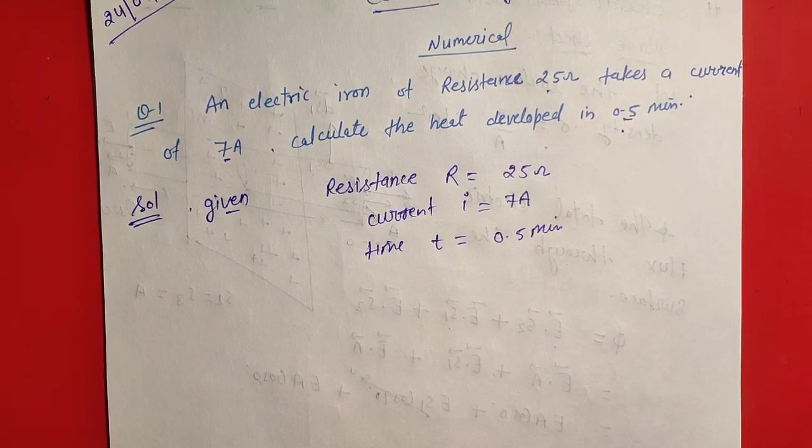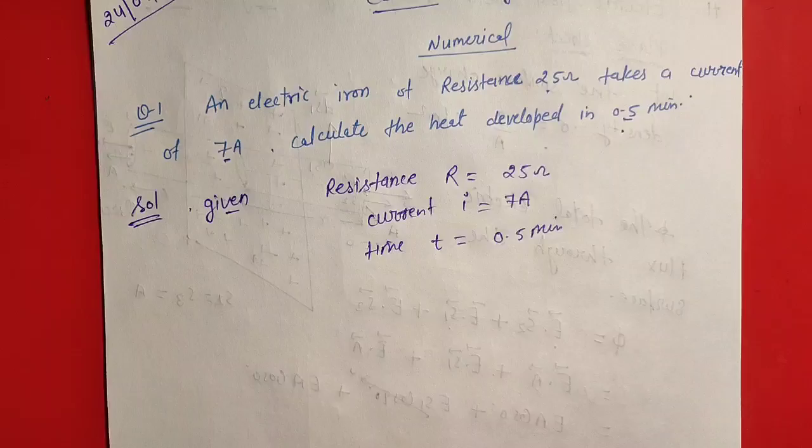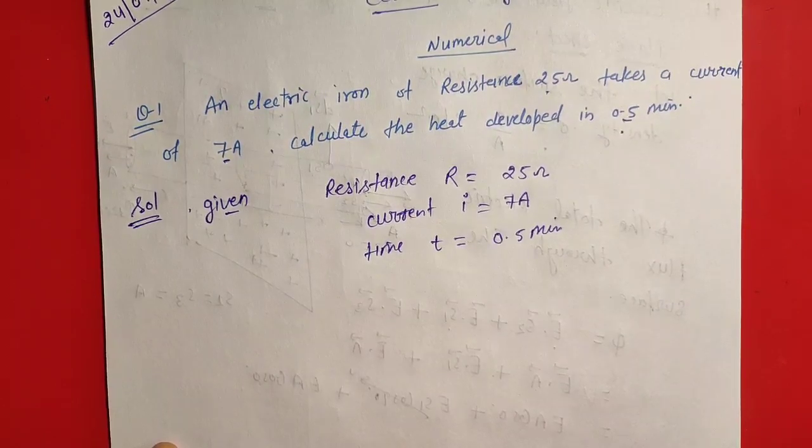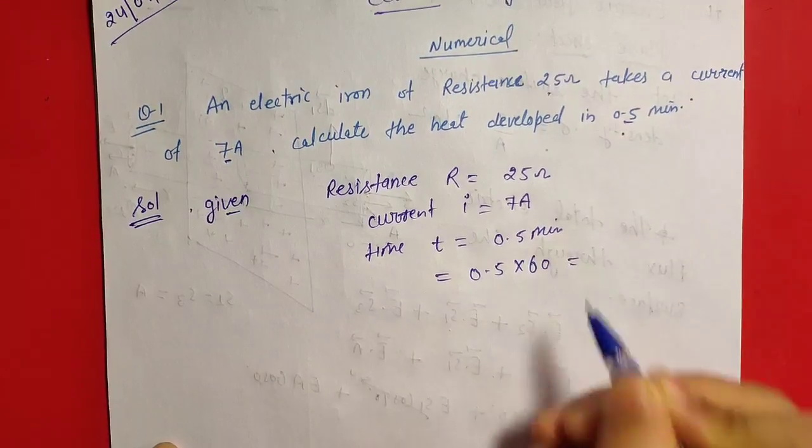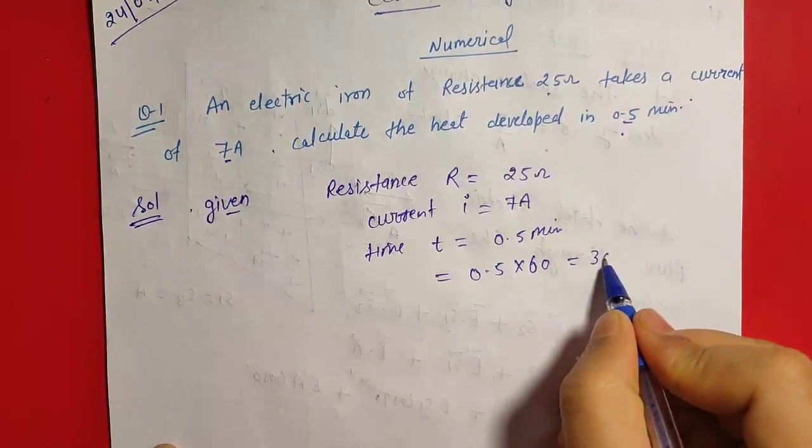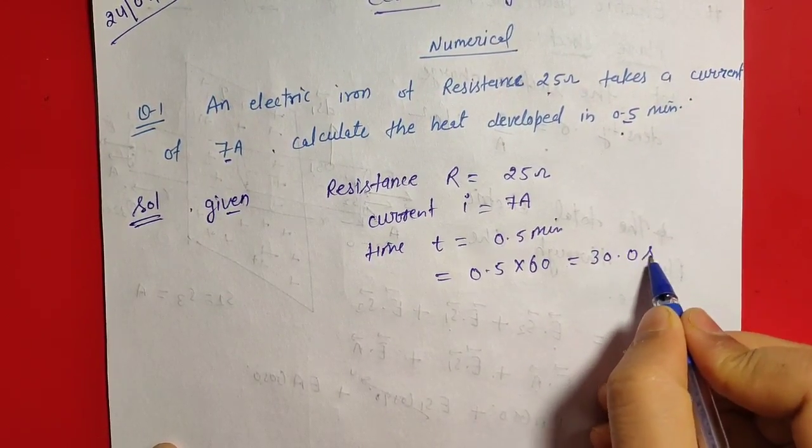Minute is not a SI unit, so convert to SI unit. We will convert to second. 0.5 into 60, multiply it, there is 30 seconds.